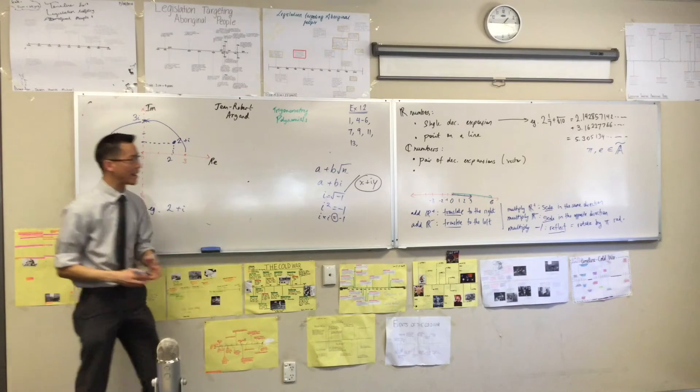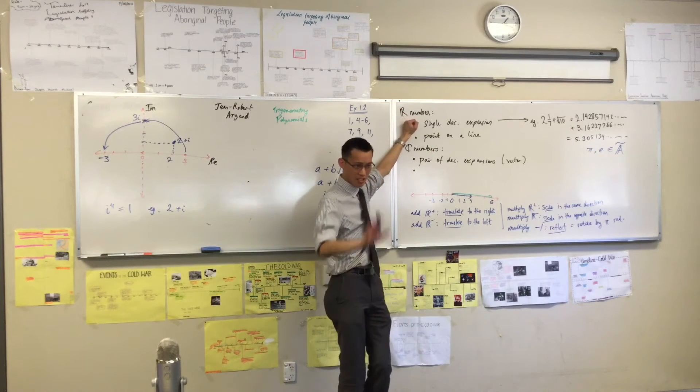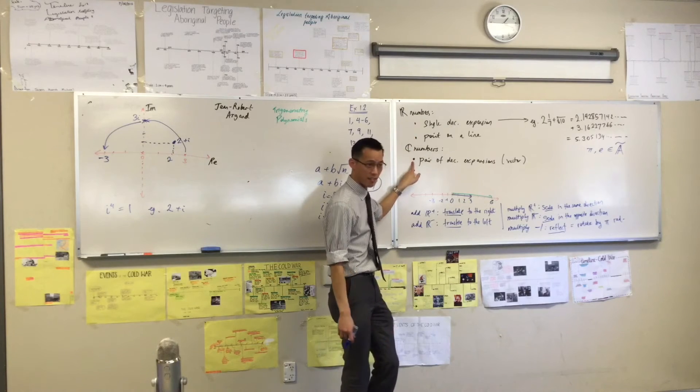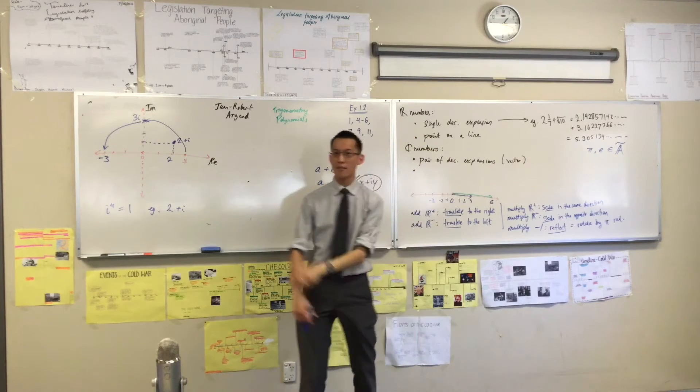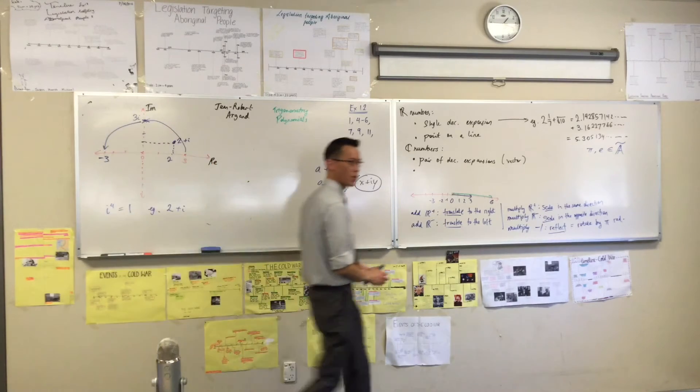So now you can see how I can extend my first definition. We said single decimal expansion. That's nice for real numbers. But it's not enough for complex, so we expanded it. In the same way, every real number that you know about is a point on a line. But complex numbers aren't just points on lines.